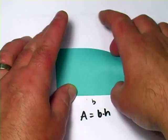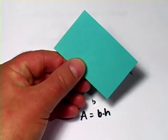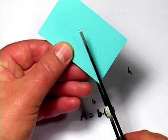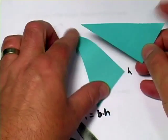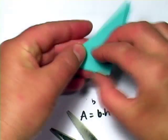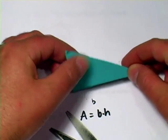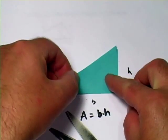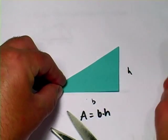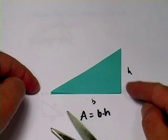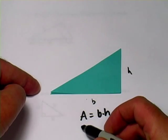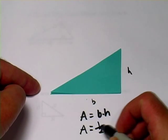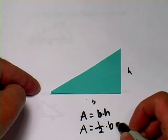One cool thing about a rectangle is that if you cut it diagonally, you get two absolutely identical triangles. Those are exactly the same triangle — they have the same area. And each one of those triangles is exactly half of that rectangle. So the formula for the area of that triangle would be one-half times the base times the height.